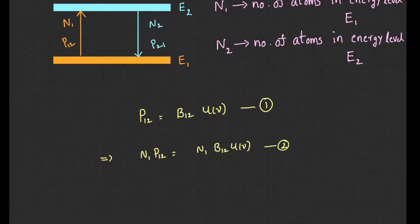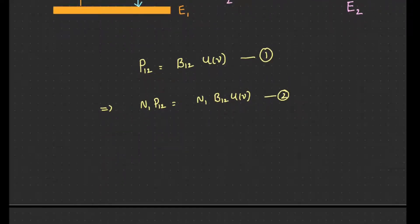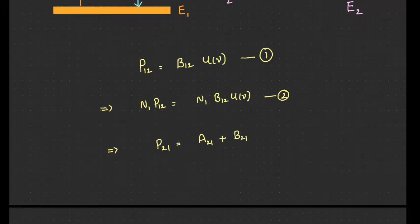Similarly, the probable rate of transition from E2 to E1 for one atom, P21, is the sum of spontaneous emission and stimulated emission contributions: P21 = A21 + B21·U(ν). This is equation 3. Since E2 contains N2 atoms, the total transition rate from E2 to E1 is N2·P21 = N2·(A21 + B21·U(ν)), which is equation 4.